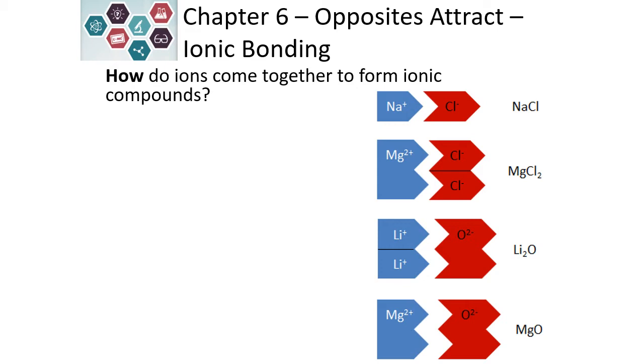If we look at magnesium and oxygen, magnesium is a plus two, oxygen is a minus two, and their charge is balanced. So we just need one of each.